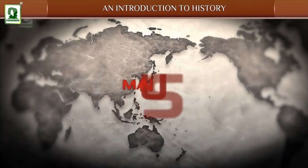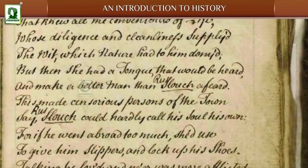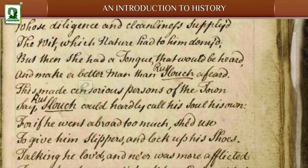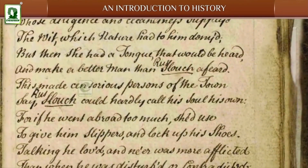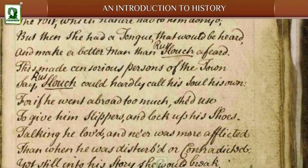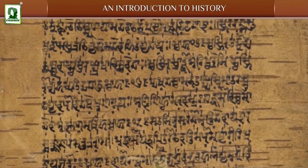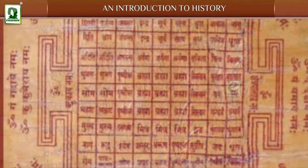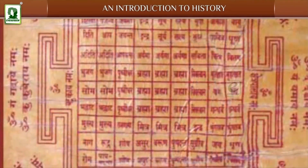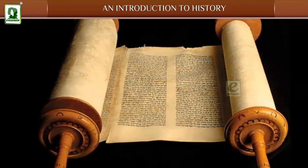Manuscripts: Manuscripts mean handwritten records. People in ancient times used to write on surfaces like barks of trees known as bhojpatras, palm leaves, and scrolls, and later on paper.